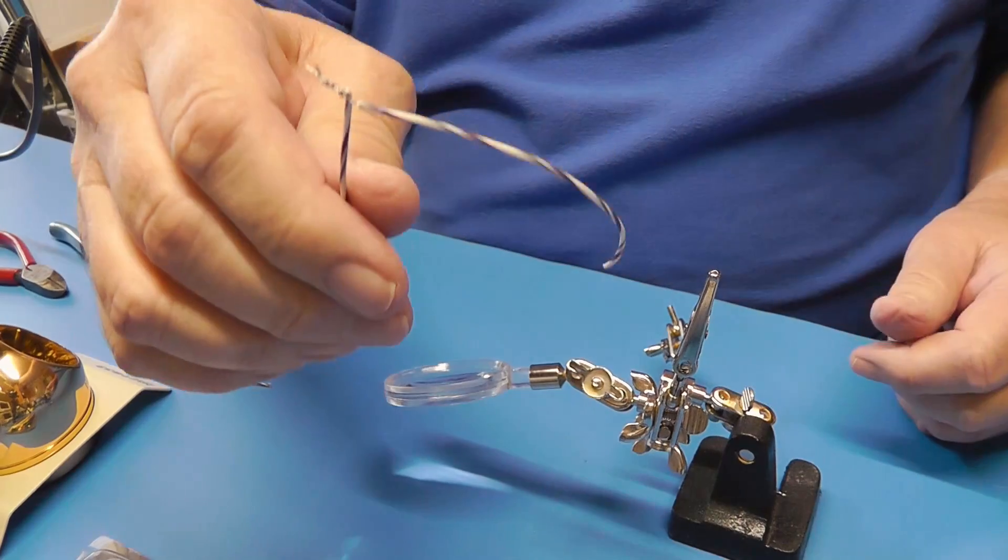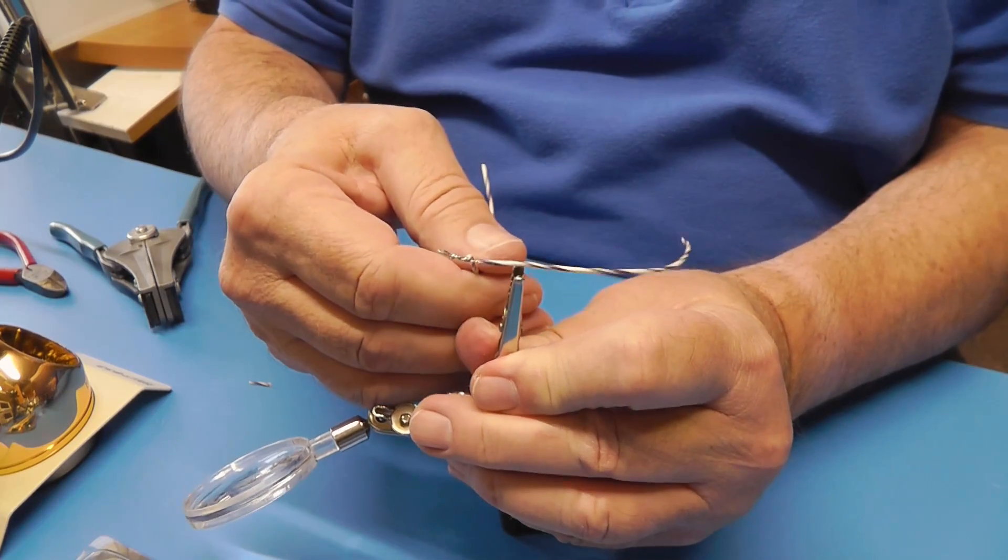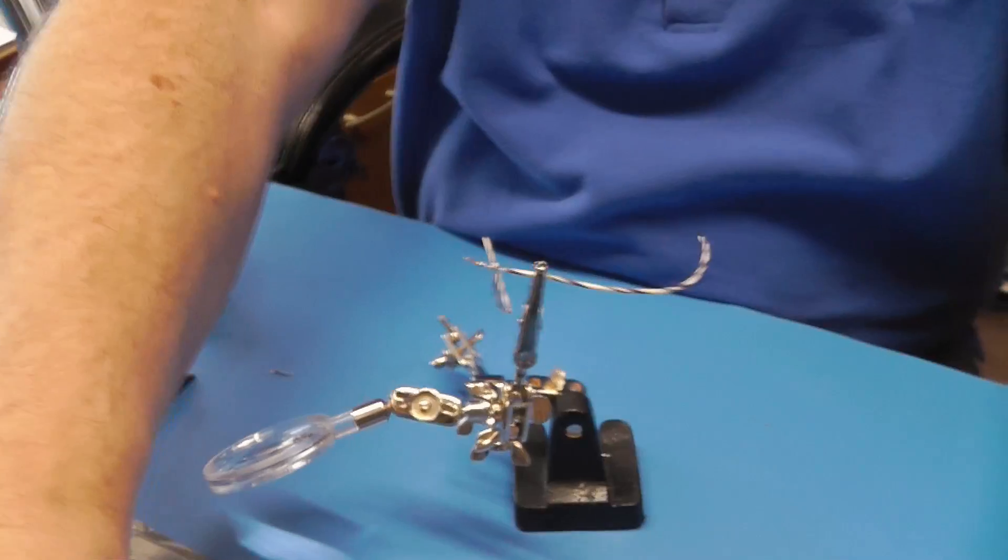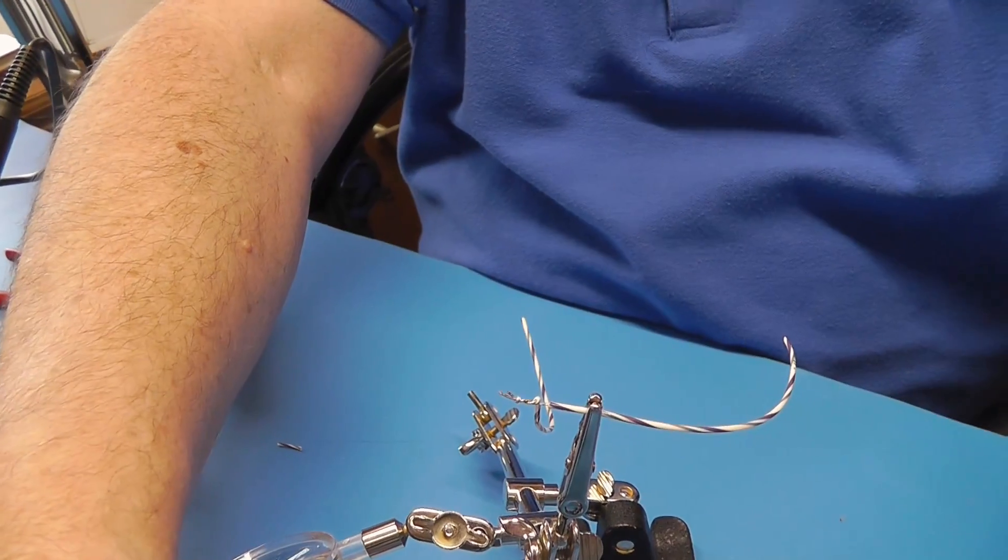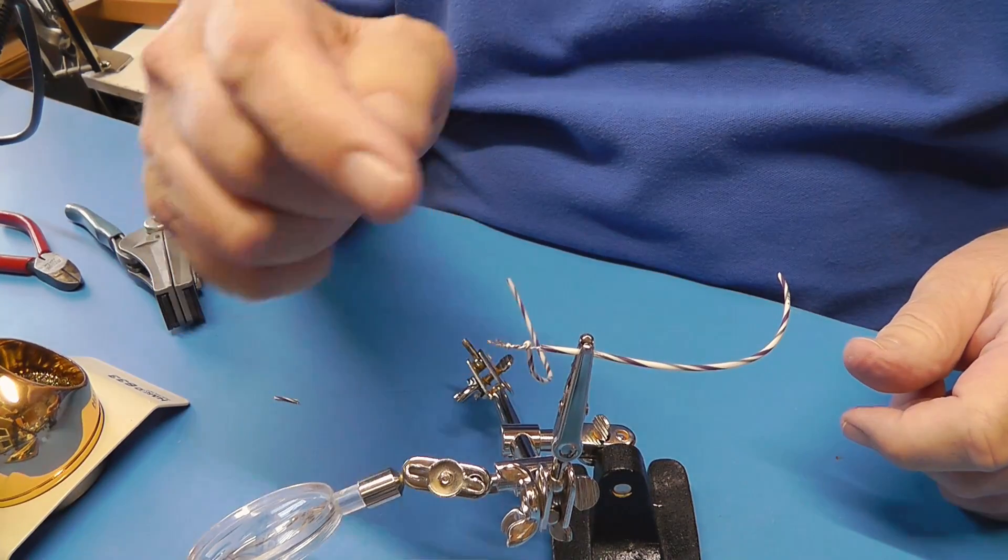So we've got this right here. Now I'm going to put this in the little vice here. Okay. And let's get just as close as we can to that. Because the part that we want to solder is right there.